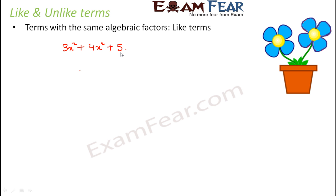Now if you observe this expression very closely, what are the terms? The first term would be 3x squared, the second term is 4x squared, and the third term is 5. So there are three terms here.